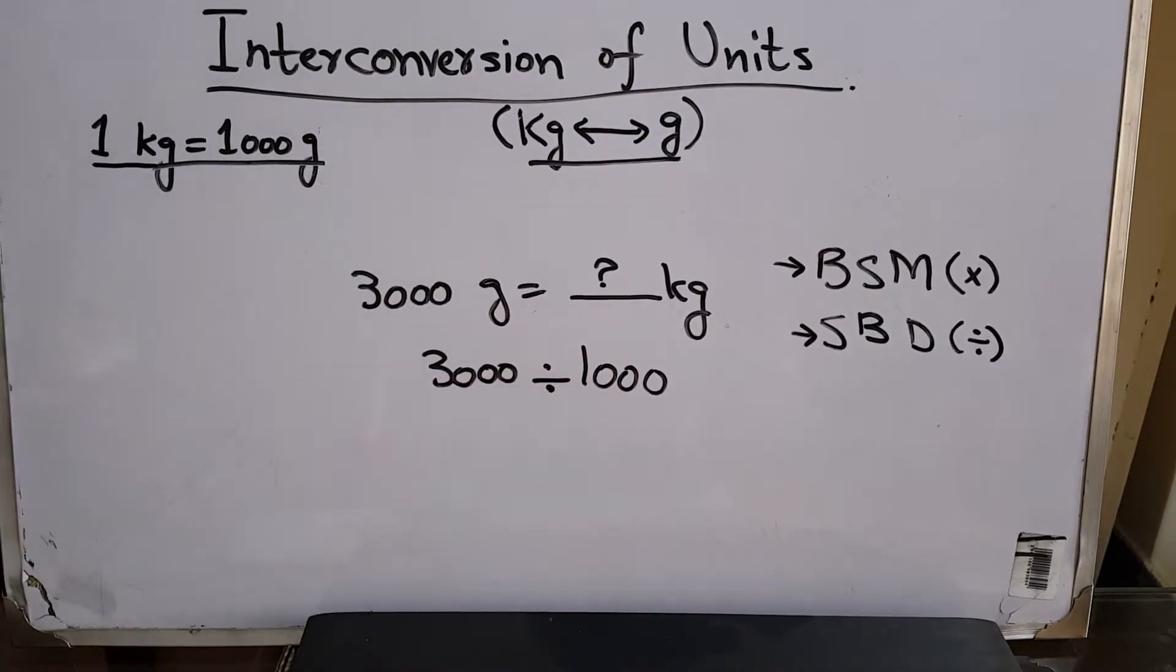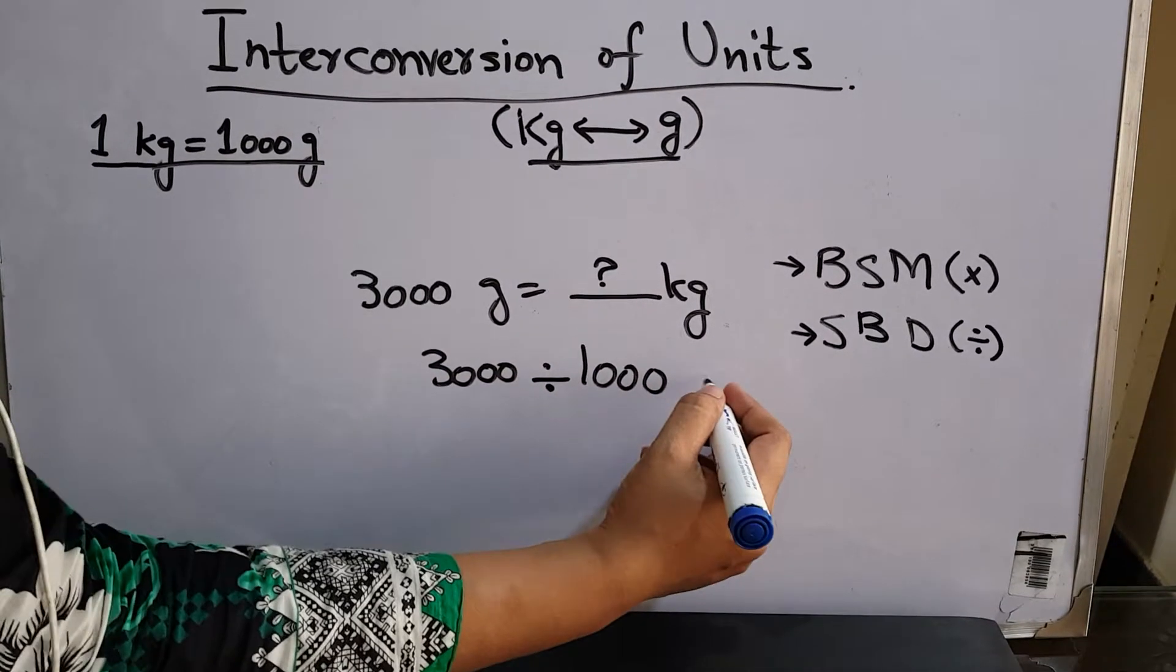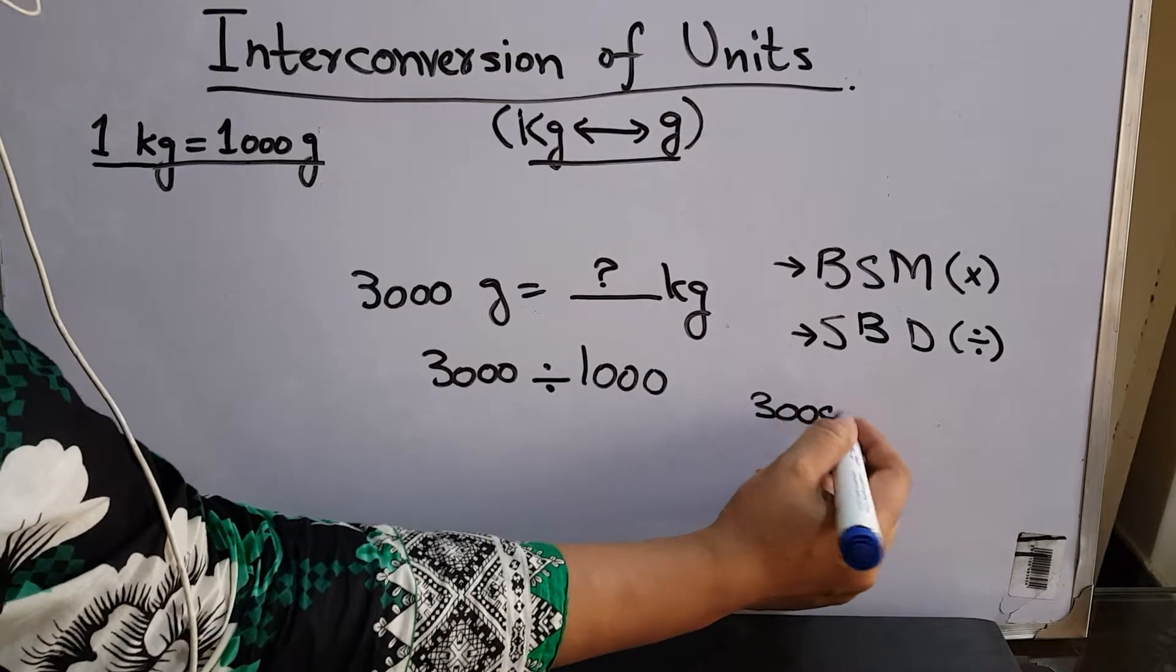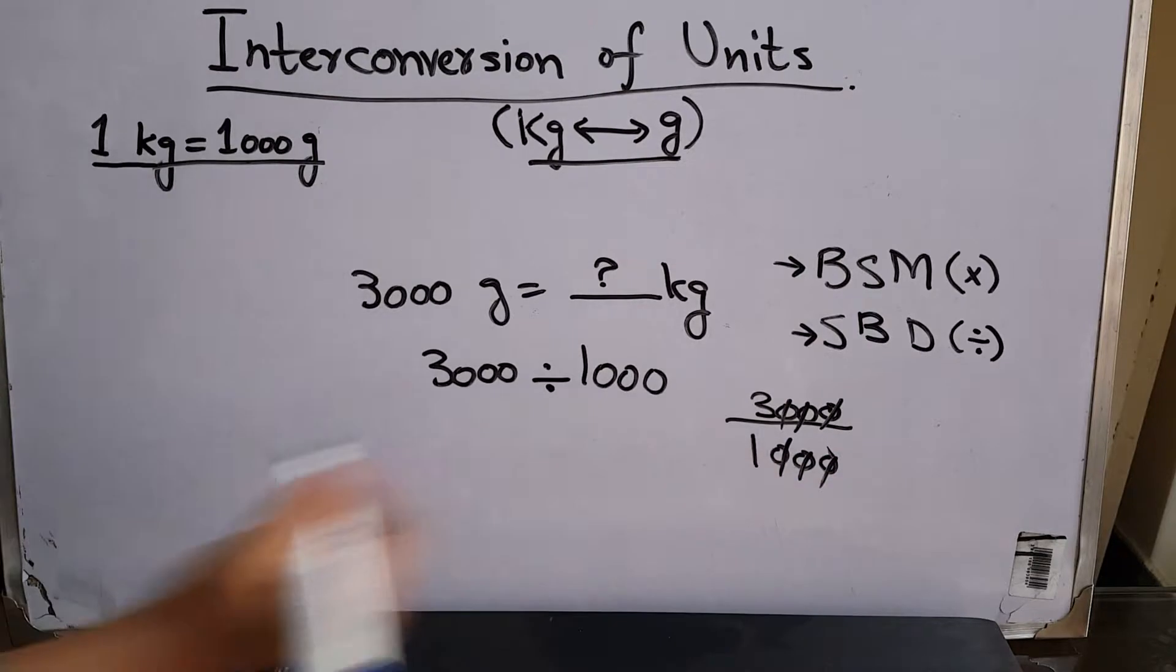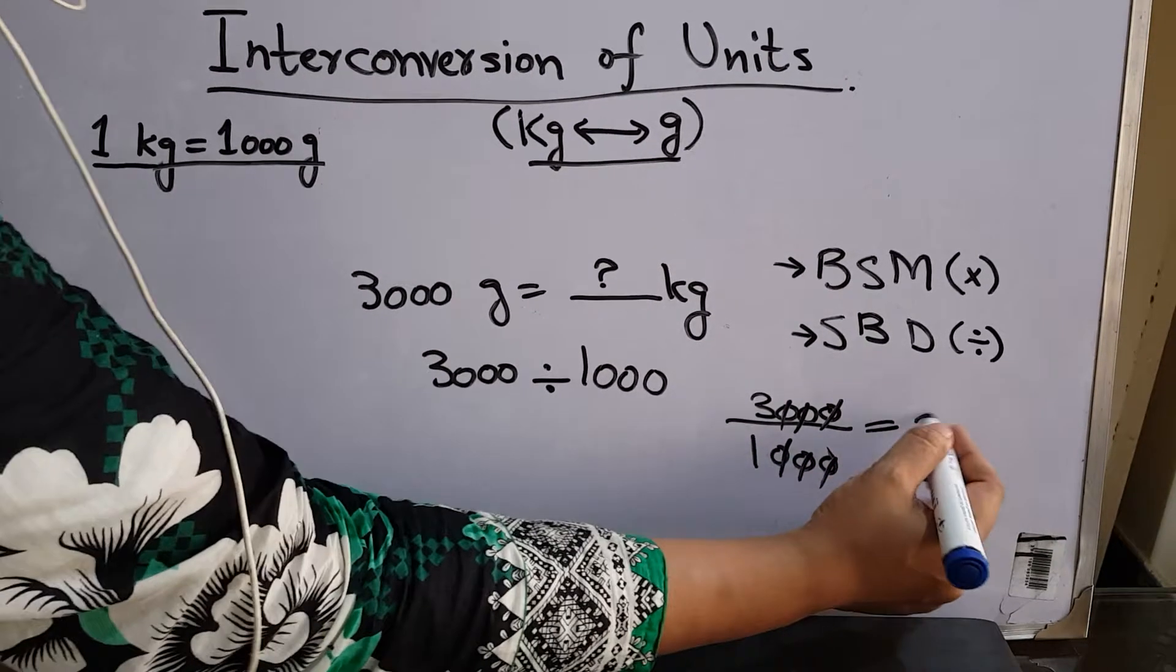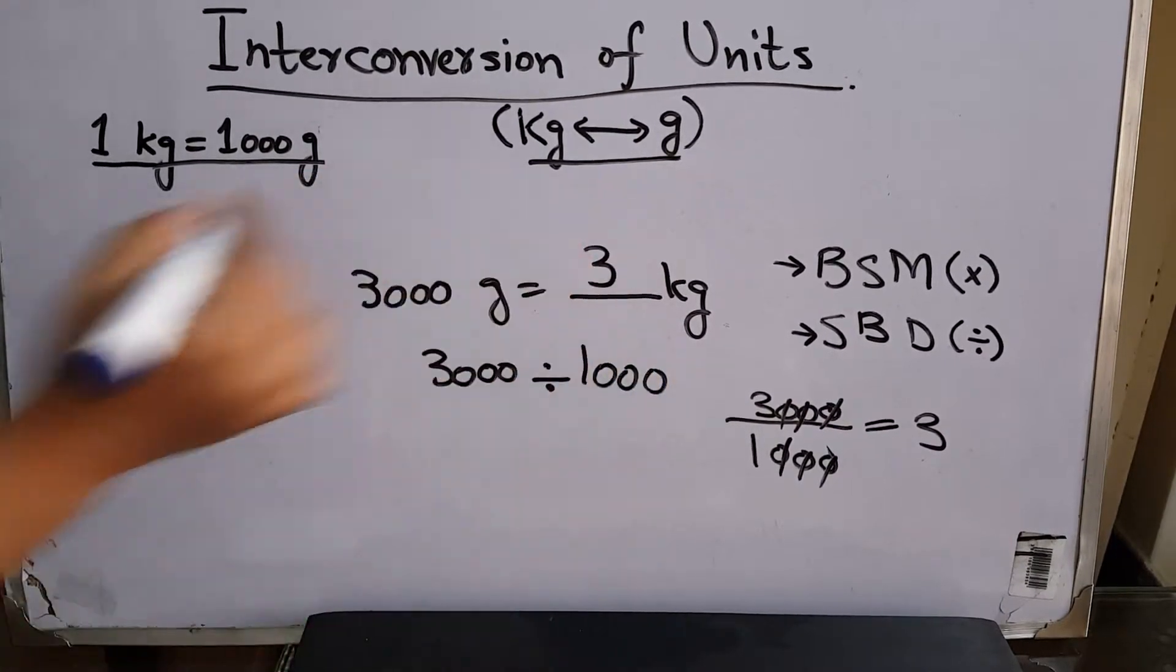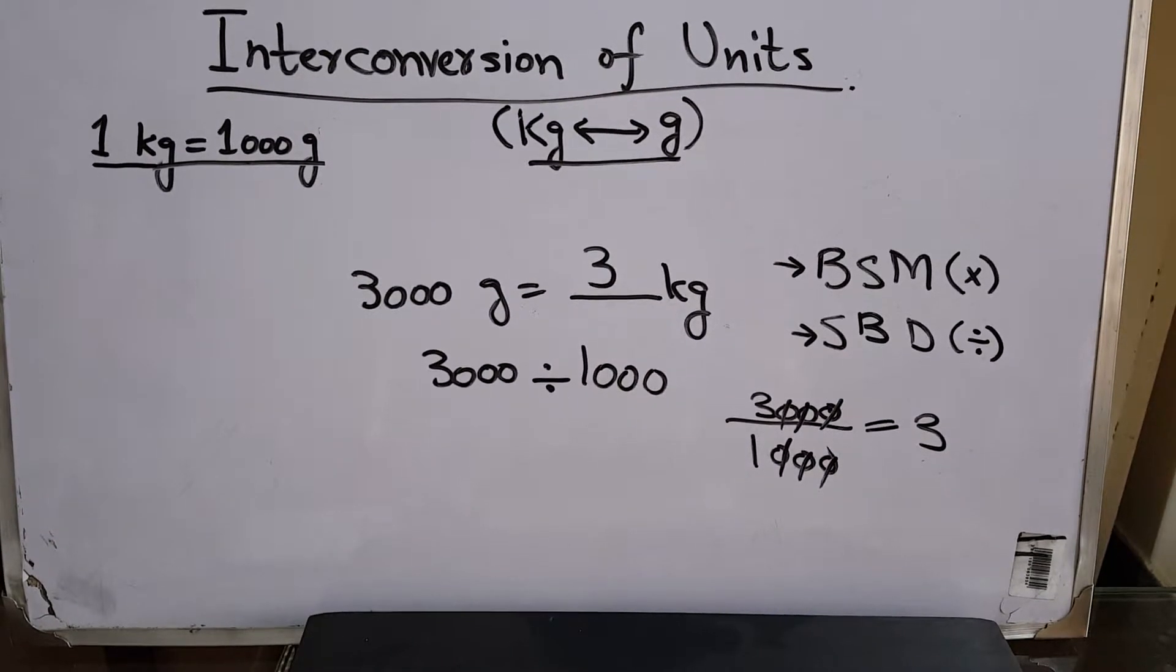So 3,000 divided by 1,000 - you cancel out three zeros with three zeros and you get 3 as an answer. So your answer will be 3 kg. You can simply do it mentally too; I just did it this way for beginners.